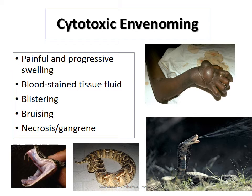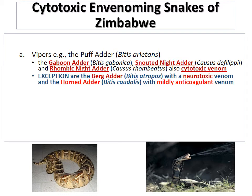The snakes we will cover include the puff adder and the Mozambique spitting cobra. Regarding cytotoxic envenoming snakes of Zimbabwe, vipers are normally associated with cytotoxic envenomation, with the puff adder, Bitis arietans, being responsible for most snake bites. Other members of the viper family include the Gaboon viper, the snouted night adder, and the rhombic night adder — all of which have cytotoxic venom.